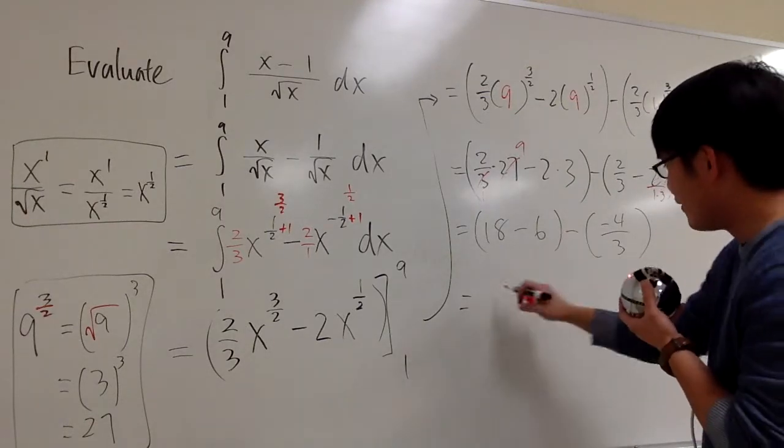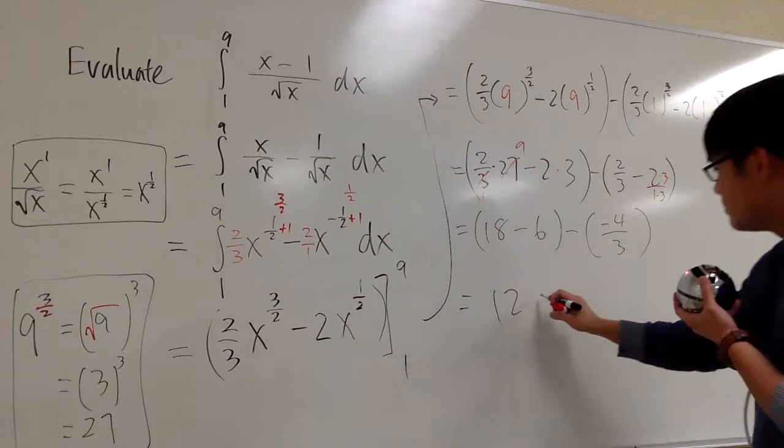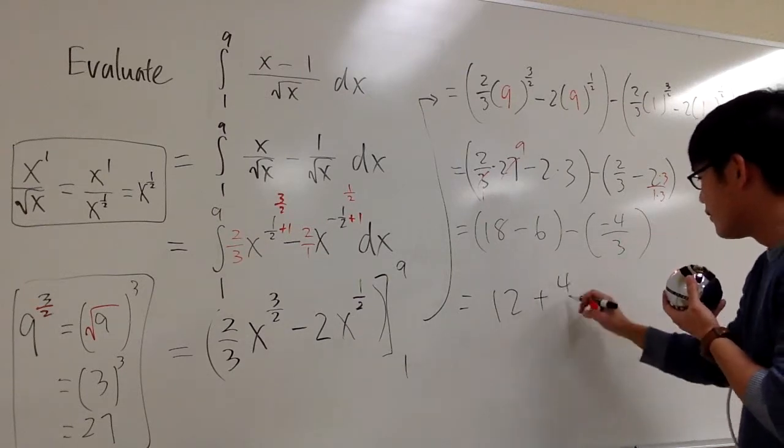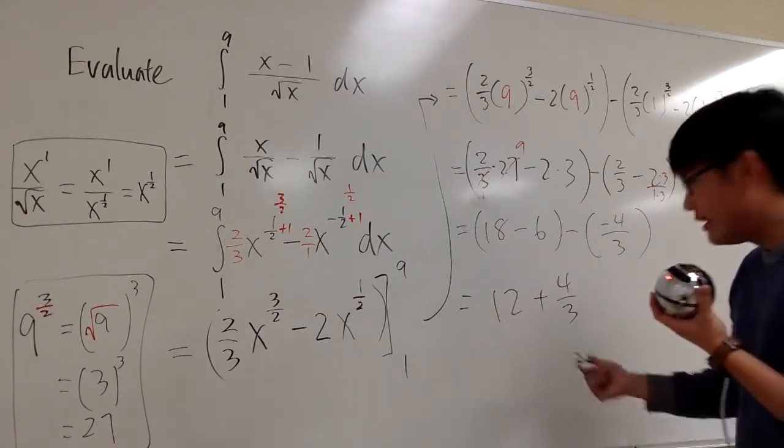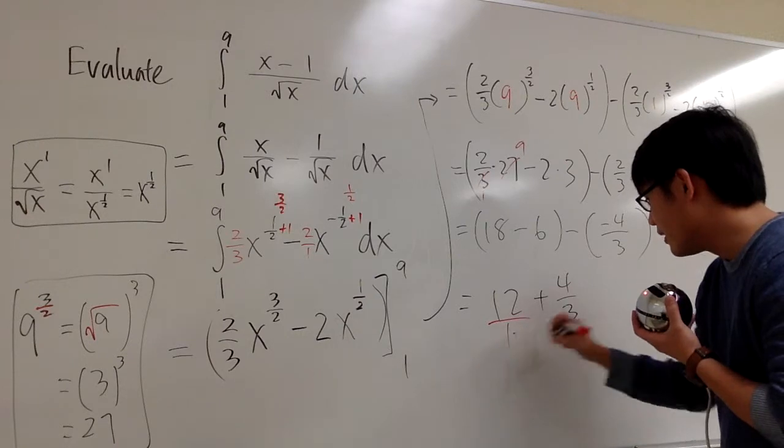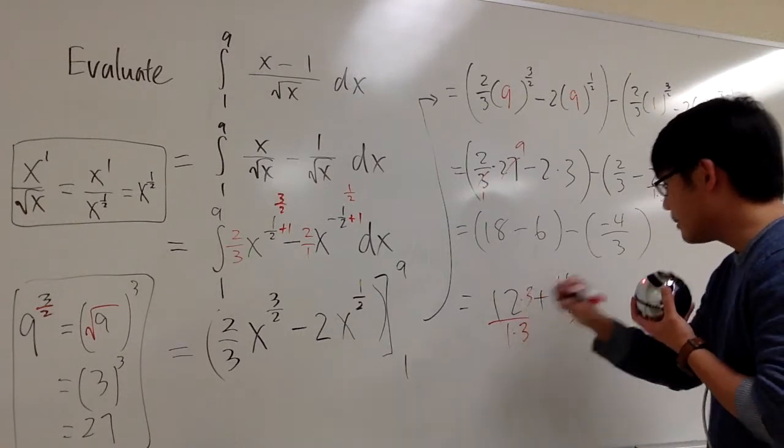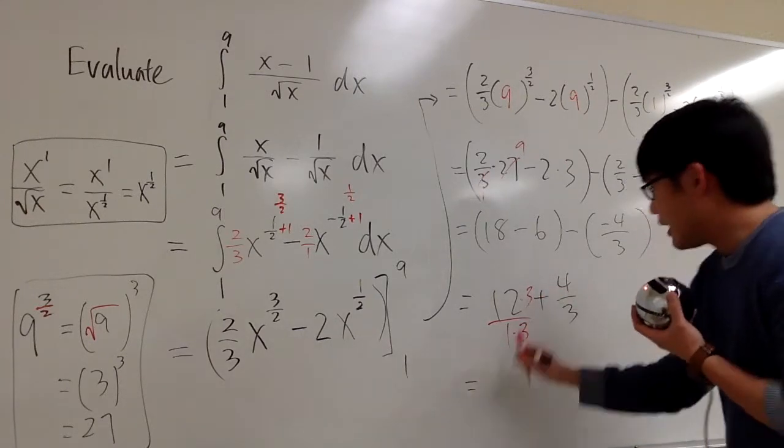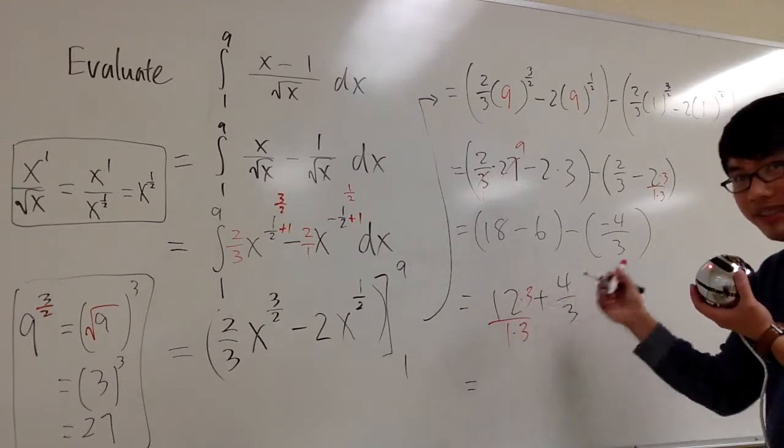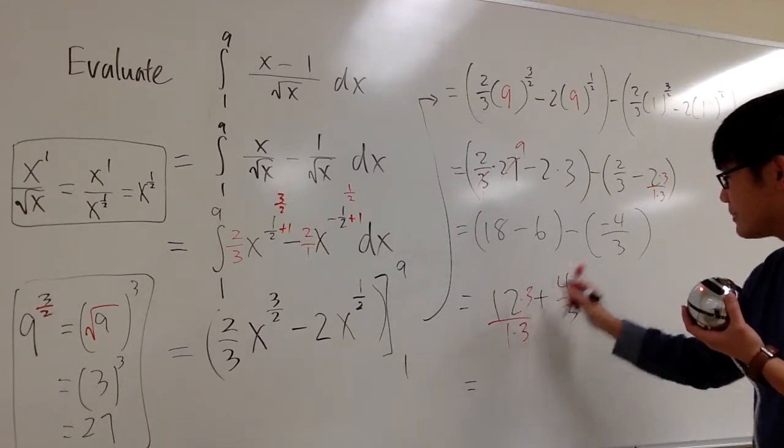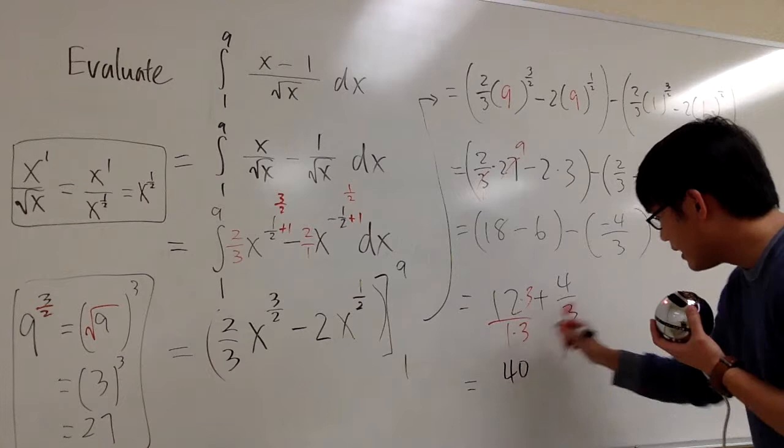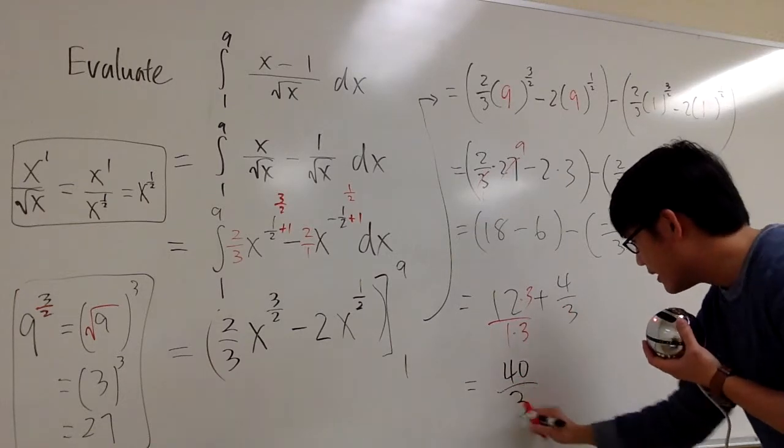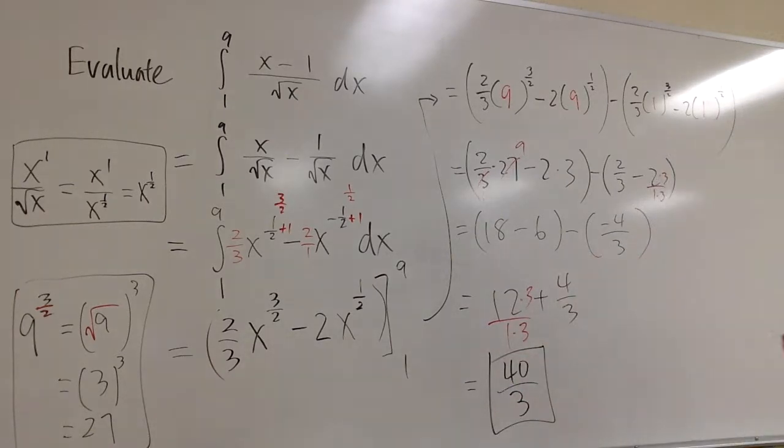Like that. This is what? Twelve. Minus minus becomes plus plus four-thirds. And then now what? Put this as over one, get the common denominator, so times three times three. On the top, twelve times three is thirty-six. Thirty-six plus four is forty. On the denominator, we have three. Forty over three. Enjoy your fractions.